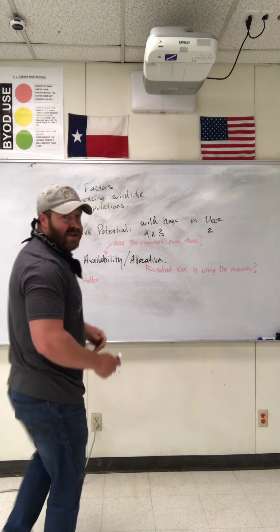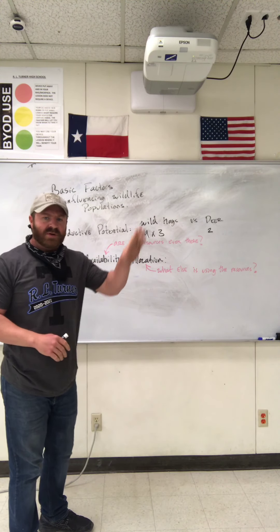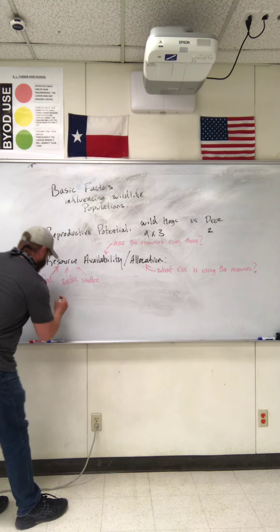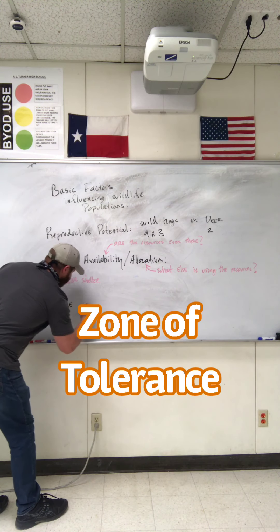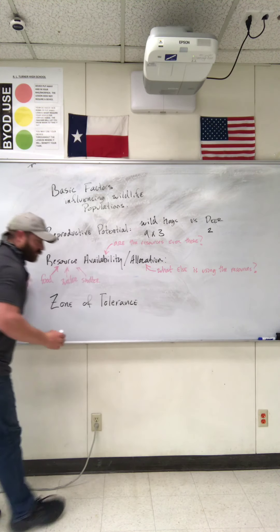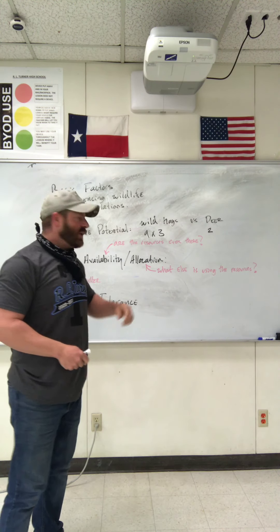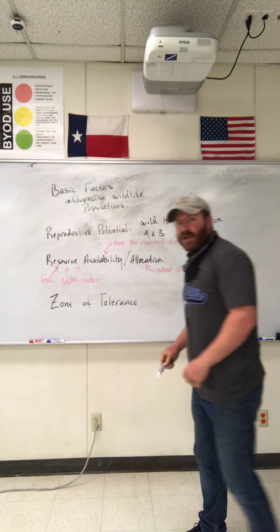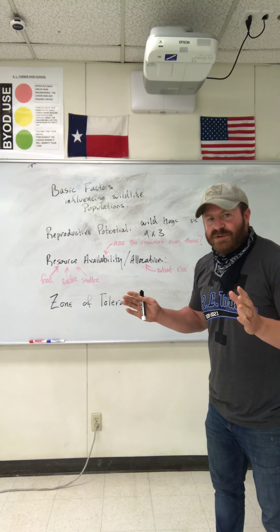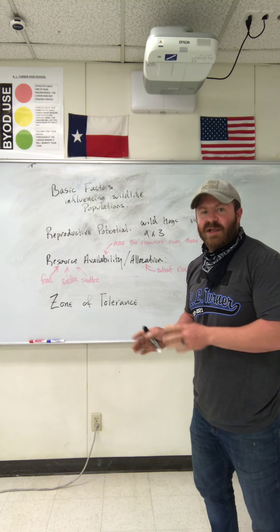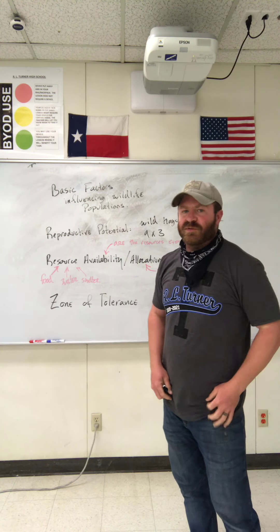One of the other major factors that affects whether an organism's population goes up or down is called zone of tolerance. The zone of tolerance has to do with the abiotic factors — not the interaction between invasive exotics and things like that. The zone of tolerance has to do with the range of abiotic factors that an organism can deal with in its environment. I'll give you some examples from your own life.